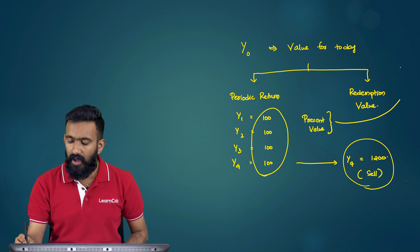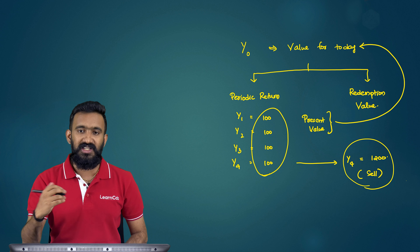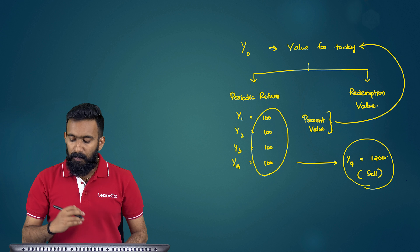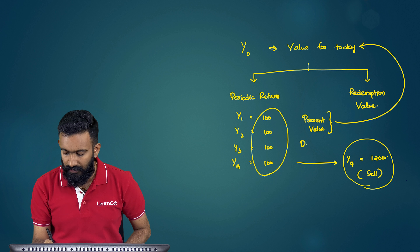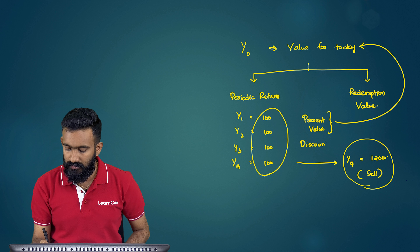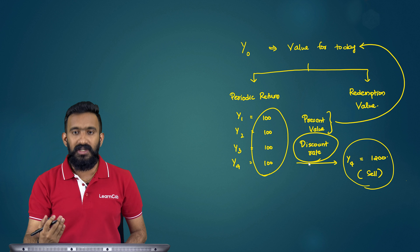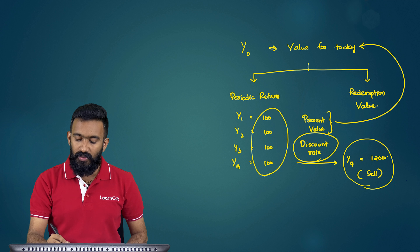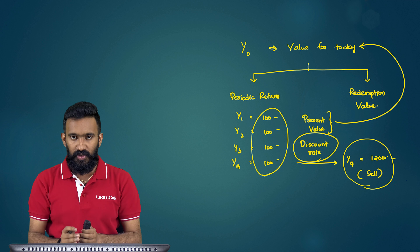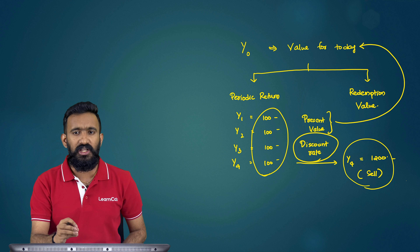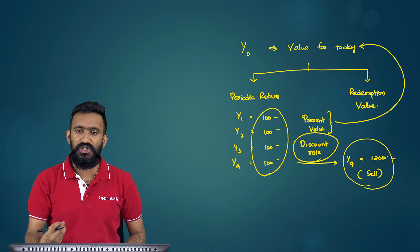Now, can I just derive the value by adding all these cash flows? No — we already know that values at different time horizons cannot be clubbed together because of the concept of time value of money. I need to derive the present value of all of them. To derive the present value of anything lying in the future, I require something called a discount rate. I pick this discount rate, discount all these incomes, derive the value today, and sum it all — that would be the value of that particular asset today.